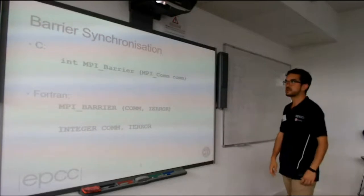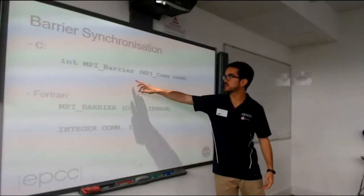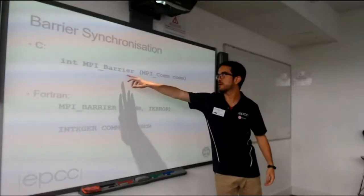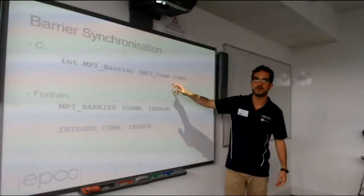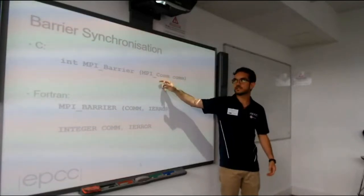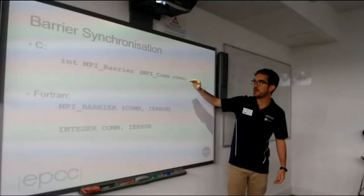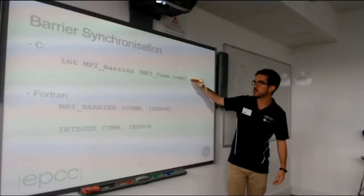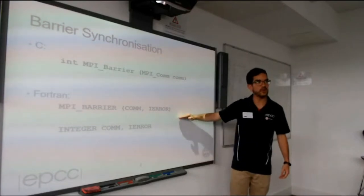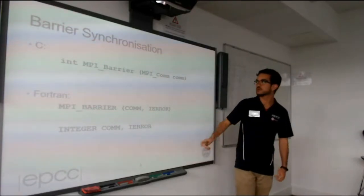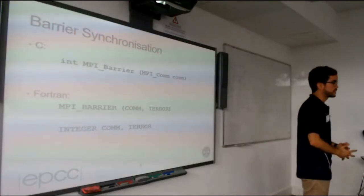To start, we have barrier synchronization. You call MPI_Barrier and the only parameter is the communicator. This is for synchronization of all processes — once all processes reach this barrier, the program continues. That's the use for synchronization.